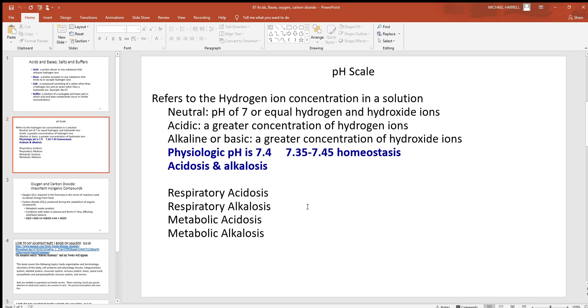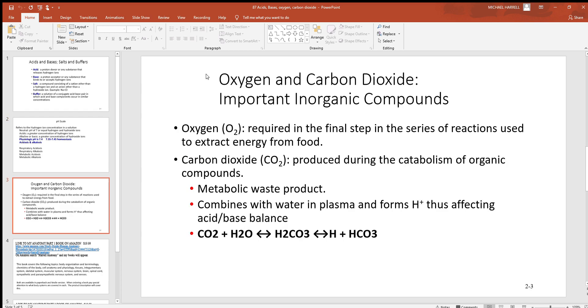We'll cover those in detail, especially in the respiratory chapter. Looking at oxygen and carbon dioxide, these are some of the very important elements inside the human body. We'll look at these more in the respiratory chapter too, but remember these are inorganic compounds. Look at oxygen here. One thing you almost always hear about oxygen and physiology: required in the final step in the series of reactions used to extract energy from food. Over and over you'll hear chapters talking about ATP production. This ATP—adenosine triphosphate—is the energy that fuels the cells.